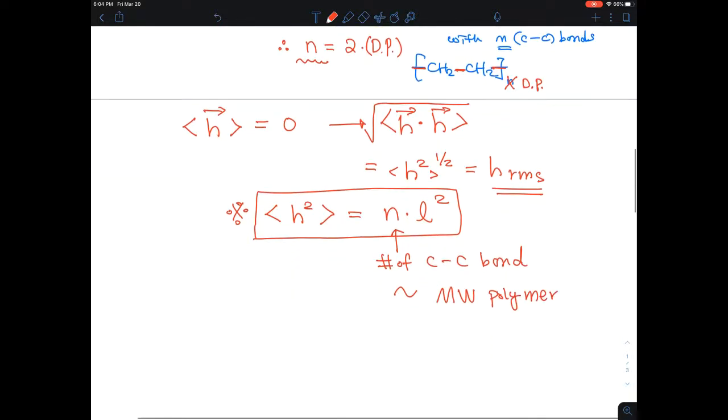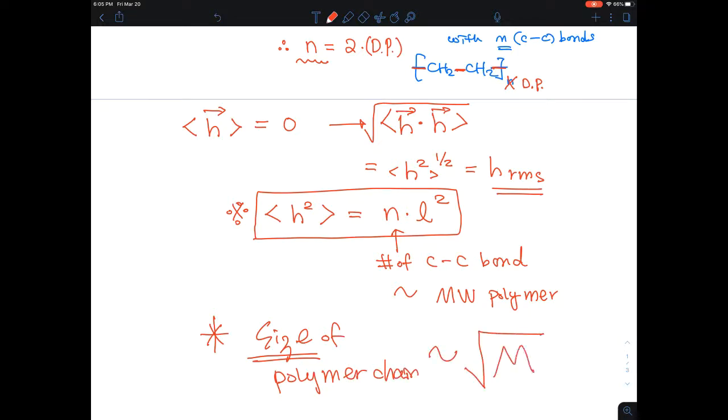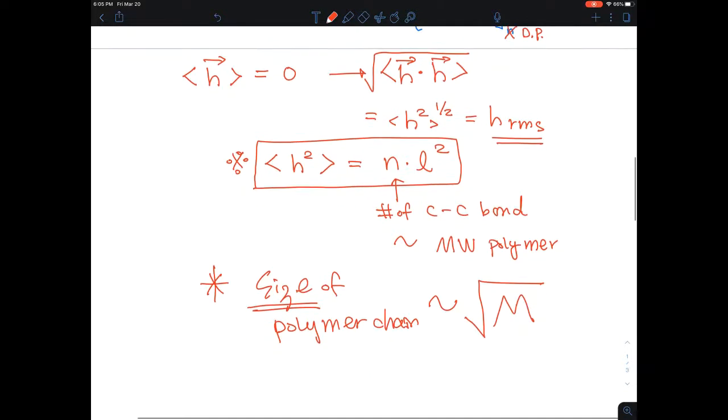So, in a way, the simple message that is already summarized here is whatever the size that we want to call the size of polymer chain is proportional to square root of the molecular weight. And that's the main take-home message for this random coil walk sections that we are going to discuss throughout.